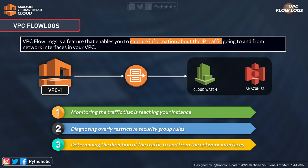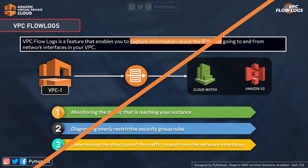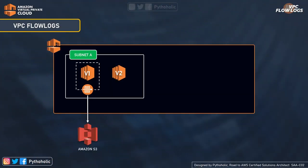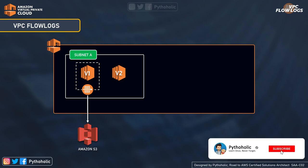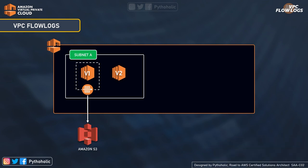You can create VPC flow logs for three entities: the VPC itself, a subnet, or a network interface. If you enable it for a subnet, all the instances and interfaces within that subnet will also be monitored.